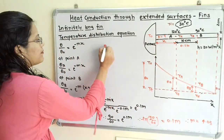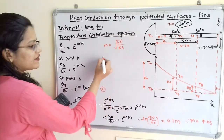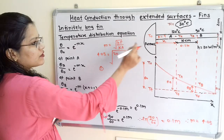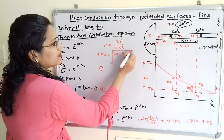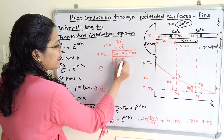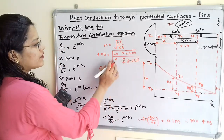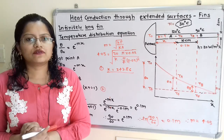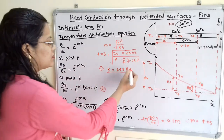Since M = sqrt(HP / KA), we substitute M = 4.05, H = 20, perimeter P = π × d = π × 0.02 m, and cross-sectional area A = (π/4) × (0.02)². Squaring both sides and solving for K gives K = 243.86 W/m·K. This is the thermal conductivity of the rod.